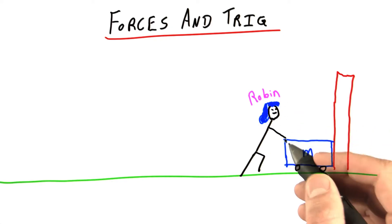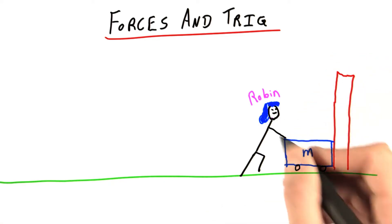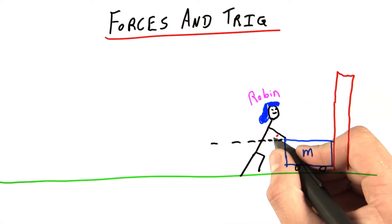In this example, something's different from last time. Robin isn't pushing exactly to the right or exactly to the left. She's pushing at some angle. And let's call that angle here alpha.